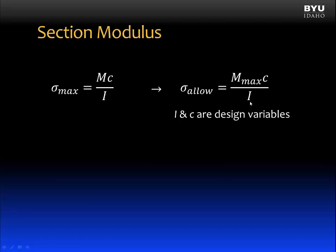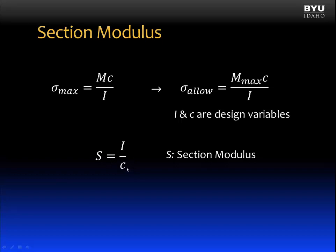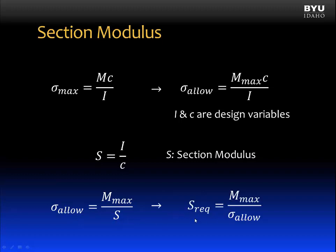If you recall, I is the moment of inertia of the cross section, and c is the vertical distance on the cross section from the neutral axis to the point furthest from the neutral axis, also called the extreme fiber. We can define section modulus as the ratio of the moment of inertia divided by the distance c. Now we can substitute section modulus into the equation above, and we get that the allowable stress is equal to the maximum moment divided by the section modulus. And we can rewrite this to solve for the required section modulus, which is equal to the maximum moment in the beam divided by the allowable stress of the beam material.